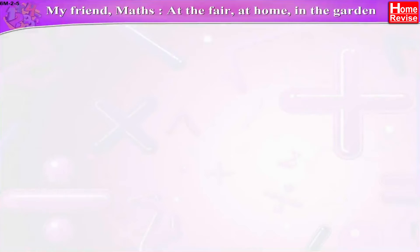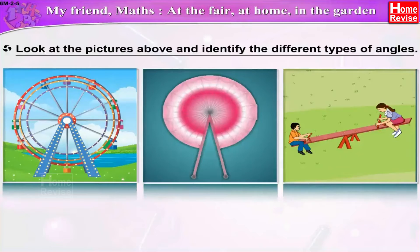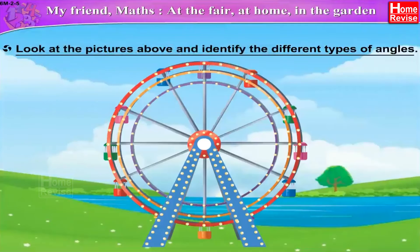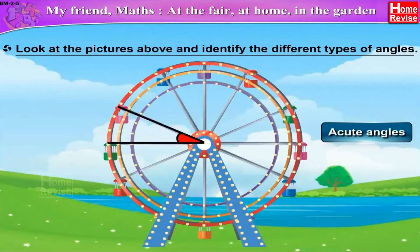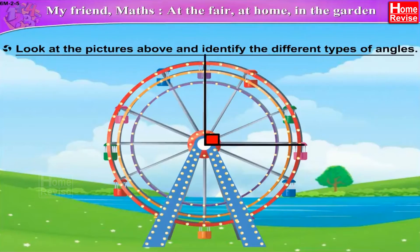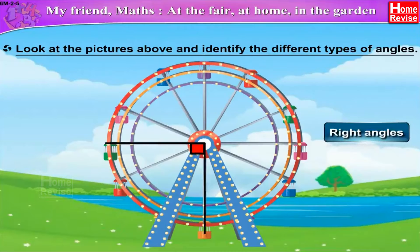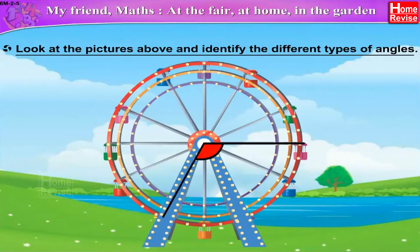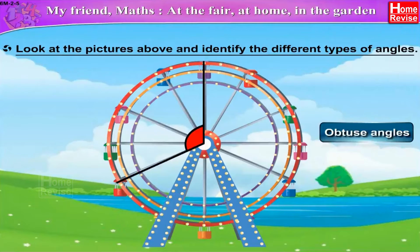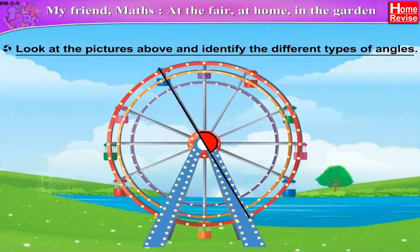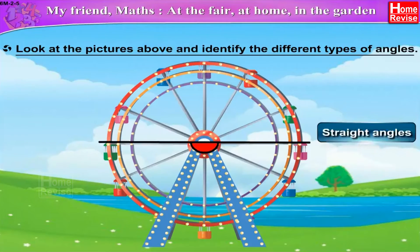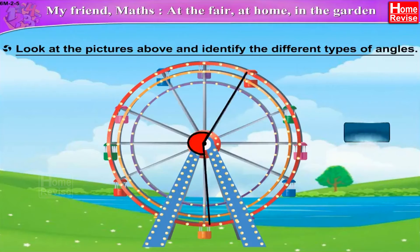My friend Mats — at the fair, at home, in the garden. Look at the pictures above and identify the different types of angles. The first picture is of a merry-go-round. These are all acute angles. These angles are right angles. These highlighted angles are obtuse angles.